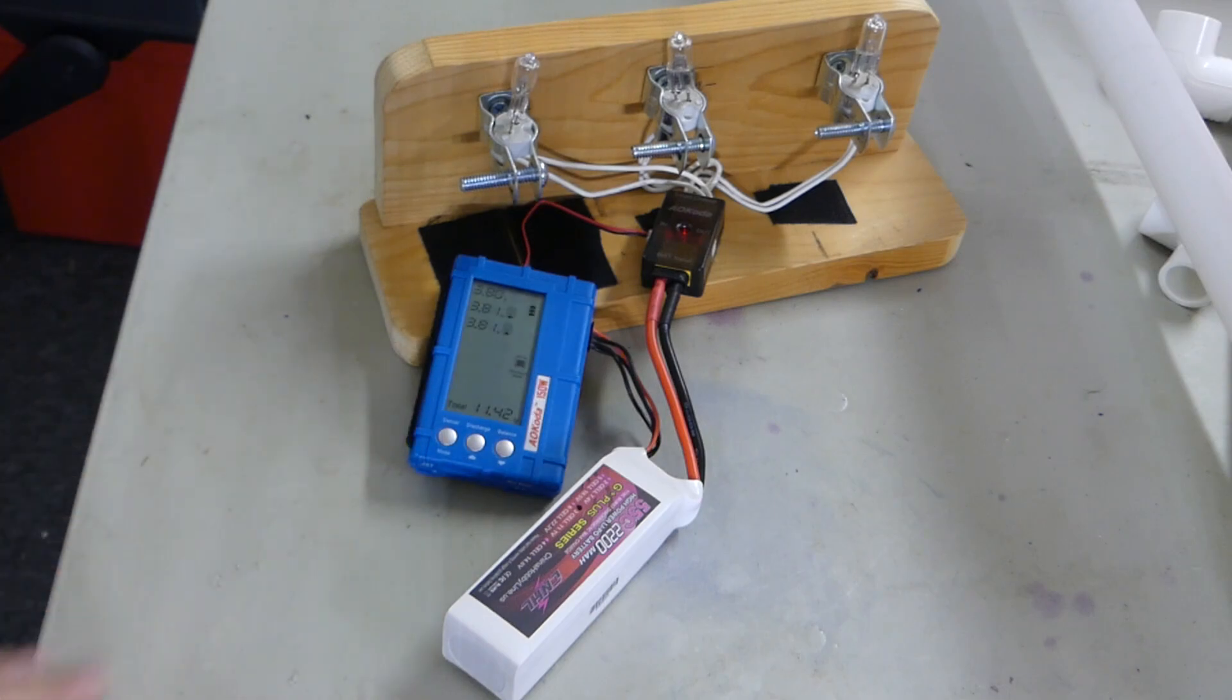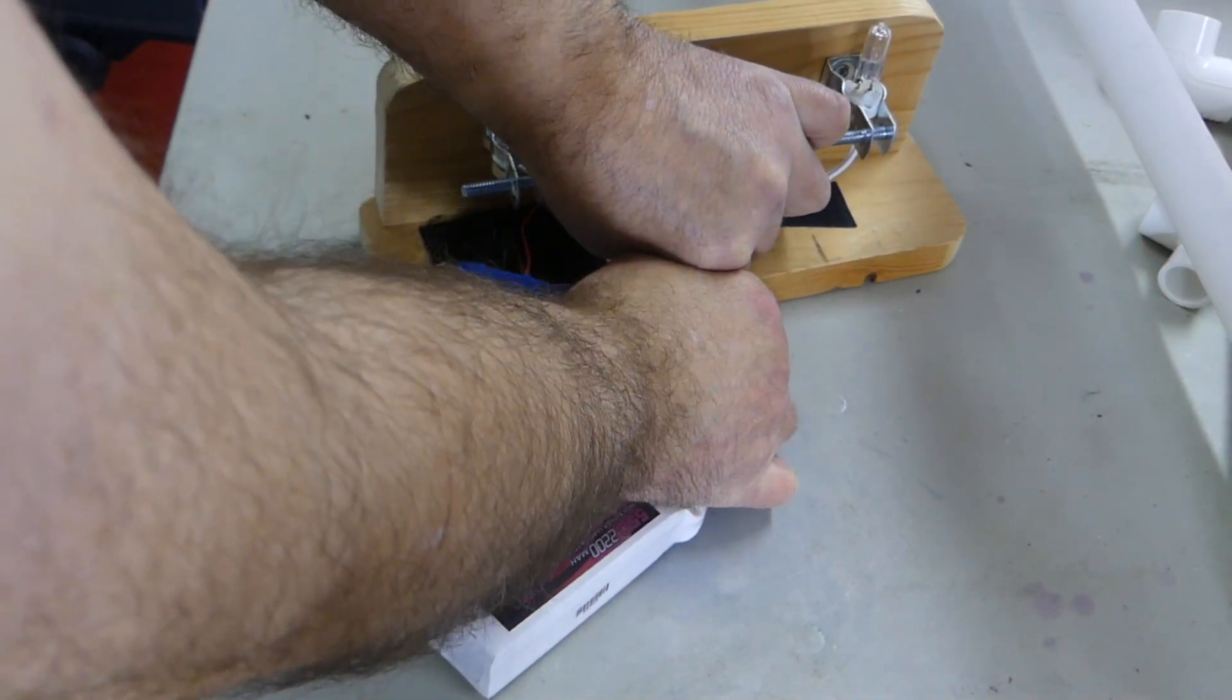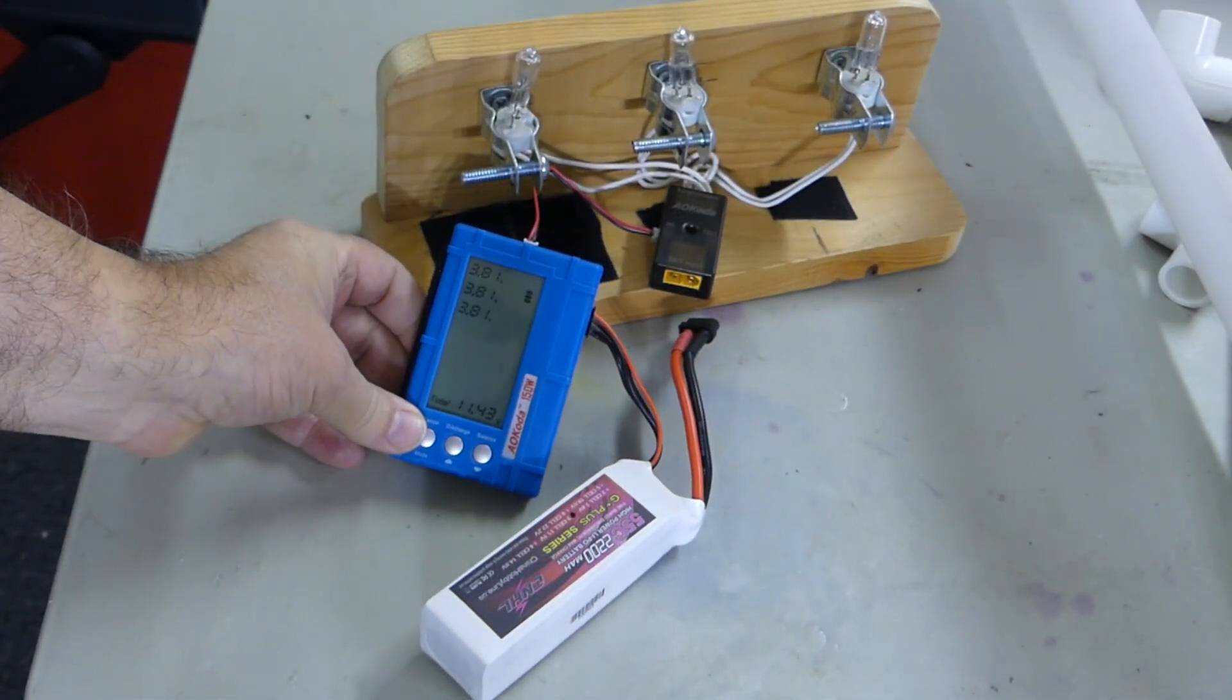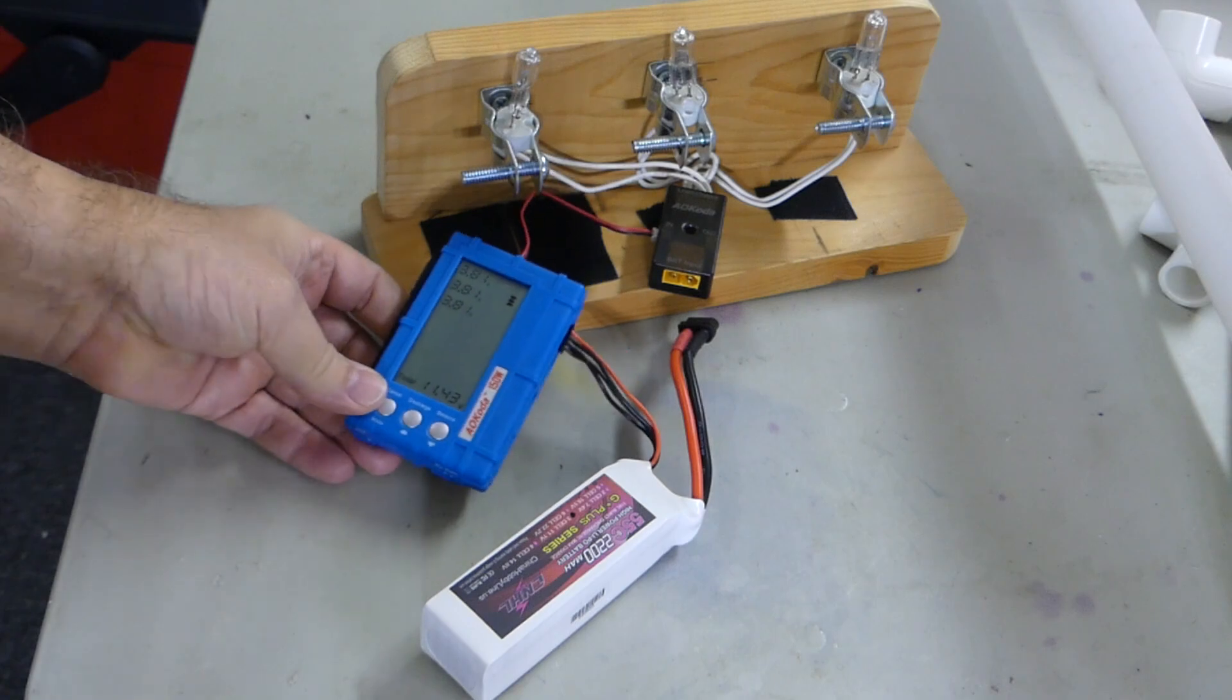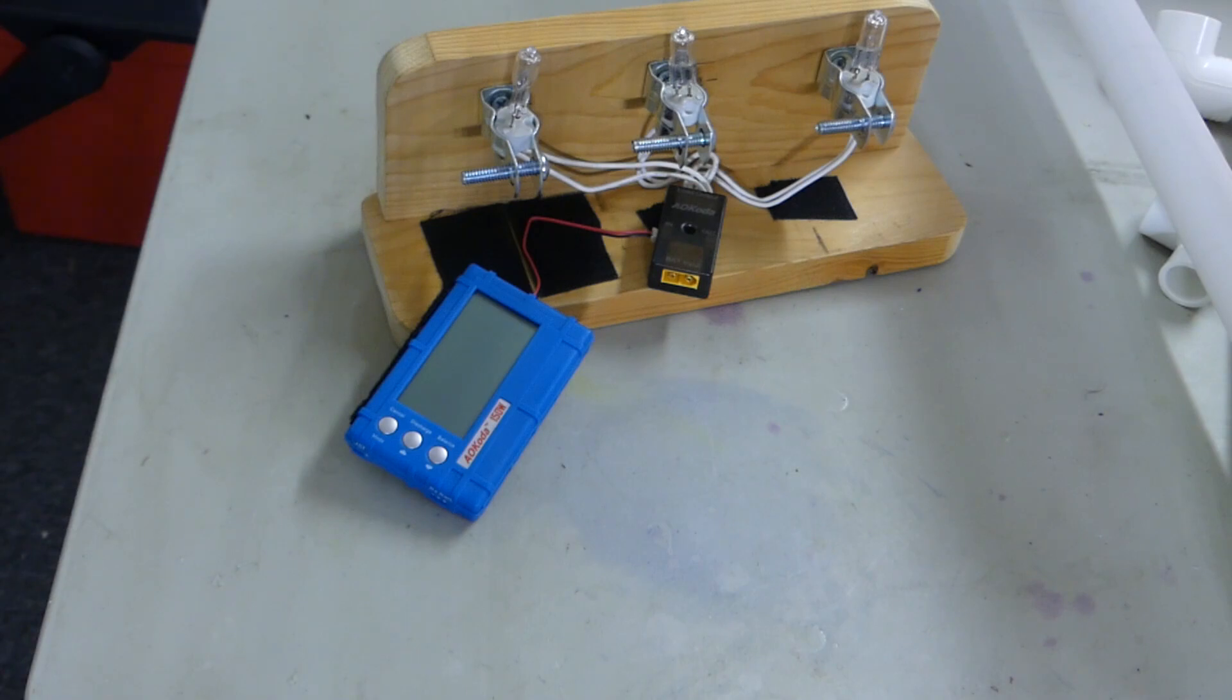We'll just disconnect it from the control port, and we see all of them are balanced out at 3.81. I didn't even need to come back in and rebalance these, mainly because the pack was in pretty good shape to start with. So there it is, the AOKODA, or if you will, AOKODA 150W. Highly recommend this to add to your toolbox. Thanks for watching.